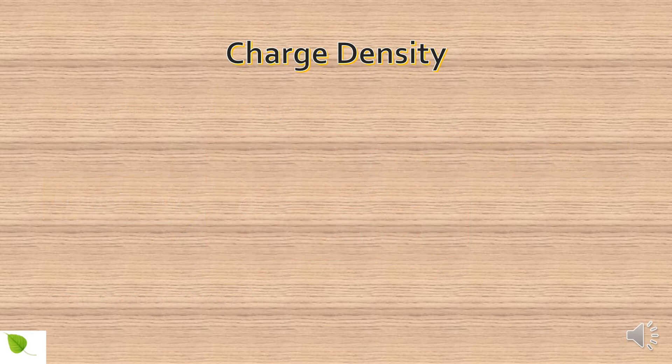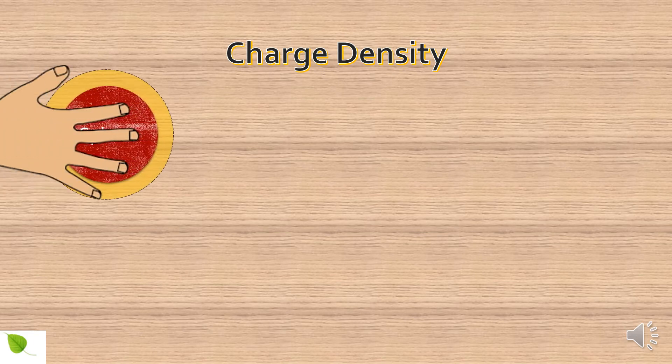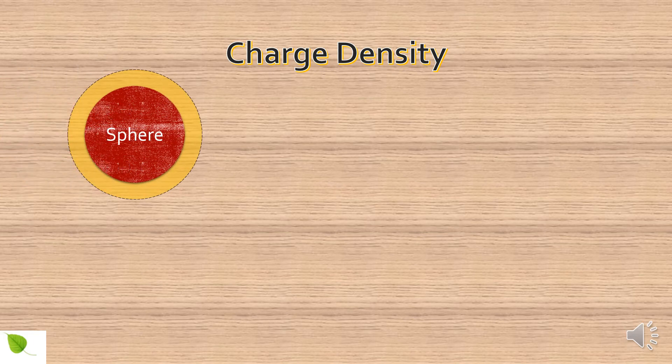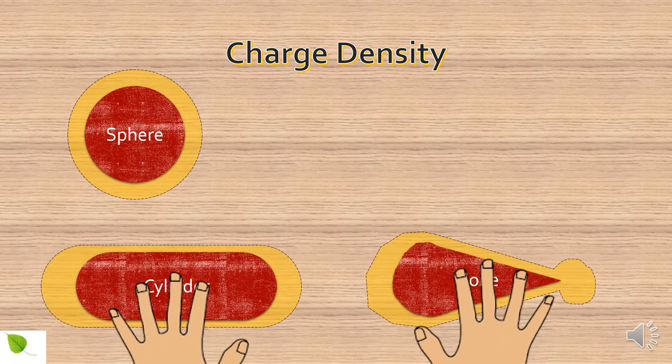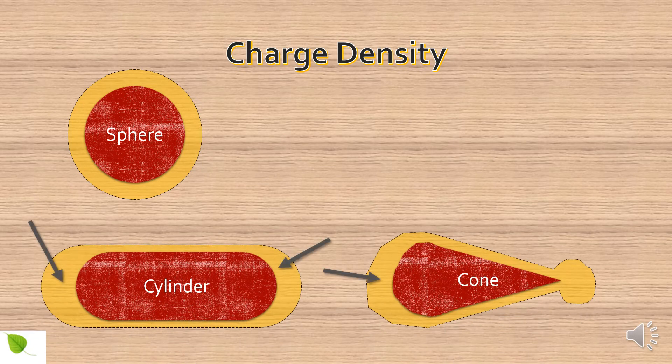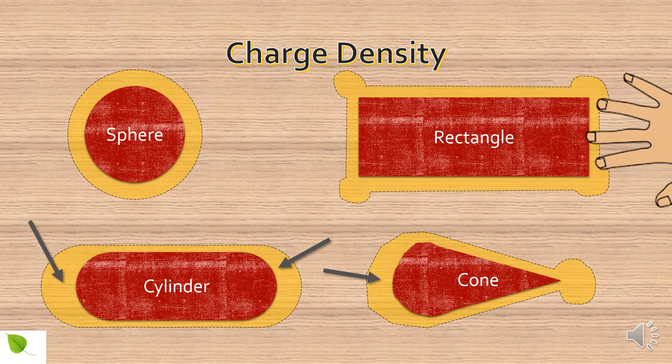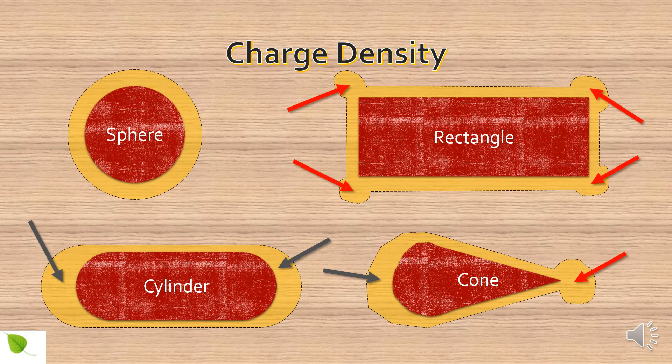It depends on the shape of the conductor as well. A spherical conductor will have a uniform charge distribution. Charges accumulate near the surfaces of highly curved parts of conductors, such as cylinders and cones, and even more in pointed corners like rectangles and cones.